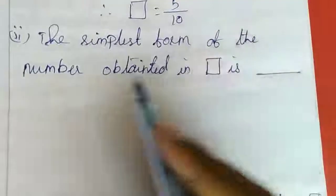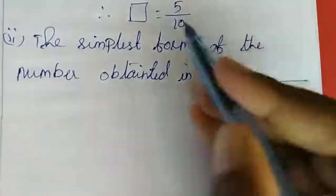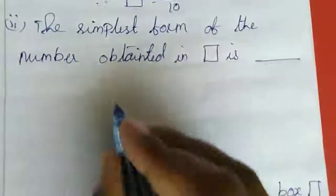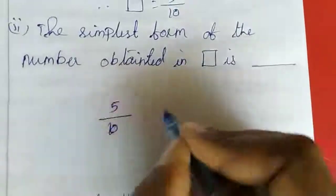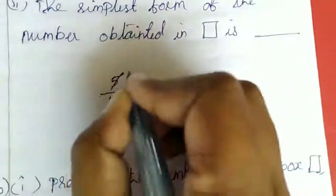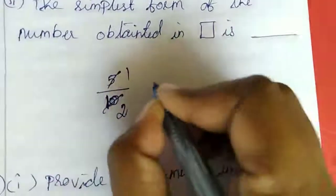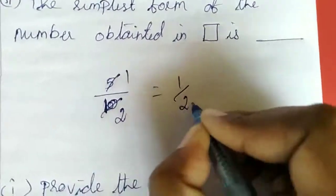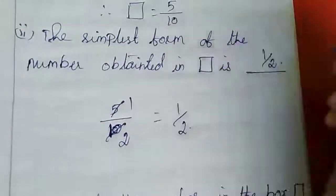Part (b): The simplest form of the number obtained in the box. 5/10 in simplest form: divide by 5. One five is 5, two fives are 10. So the simplest form is 1/2.